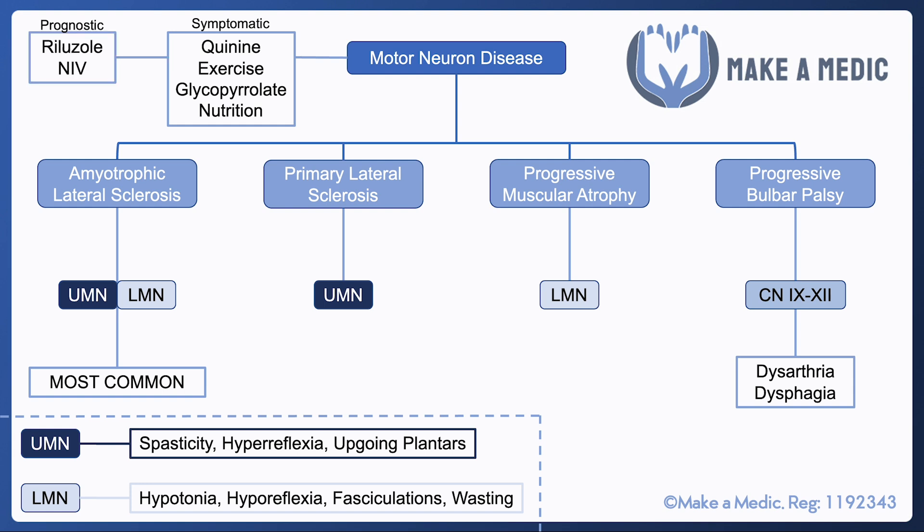There are a couple of interventions which are known to be of prognostic benefit. Riluzole is an agent that is thought to extend patients' lives by a few months, and non-invasive ventilation is also very useful once patients become so weak that their respiratory muscles are no longer functioning as well as they would be otherwise.